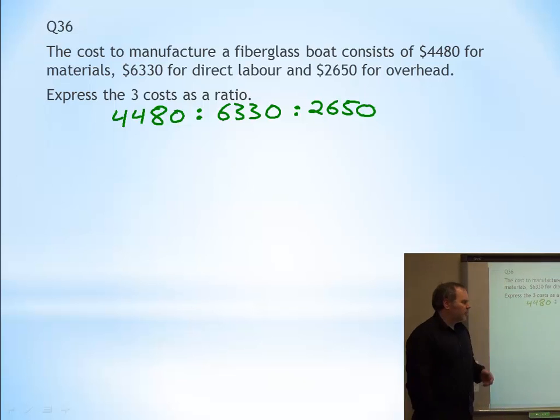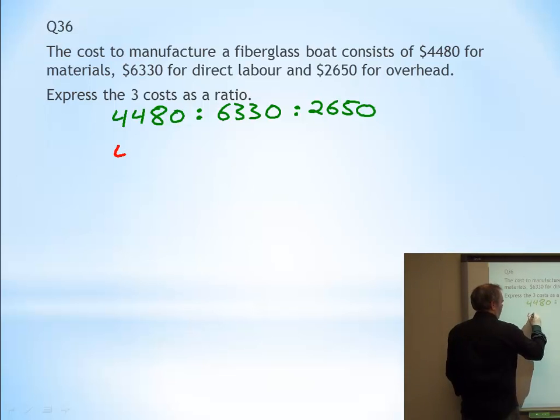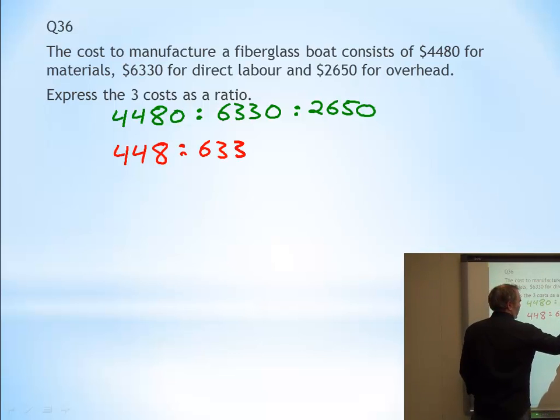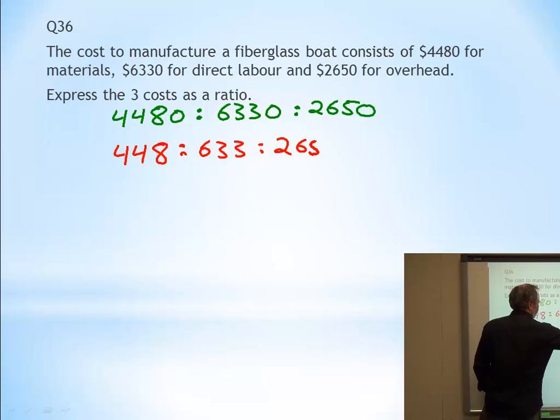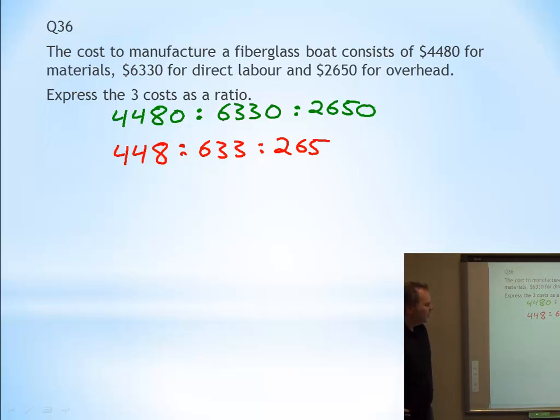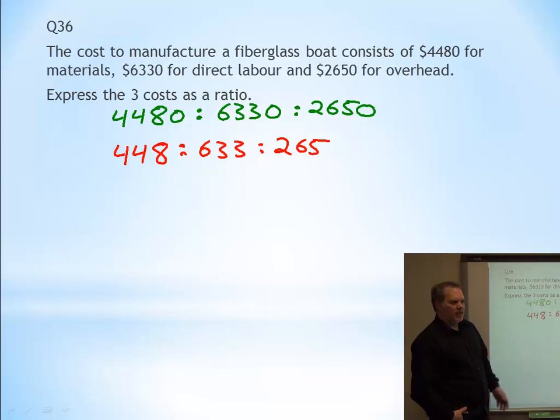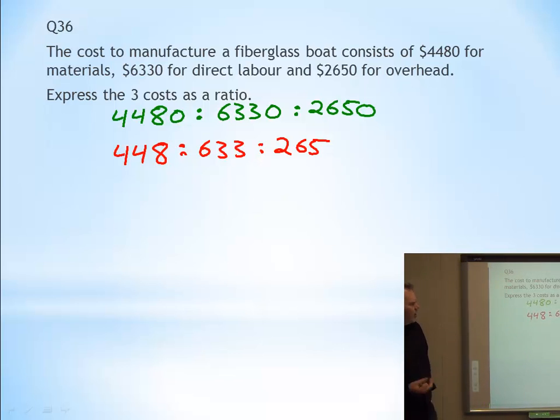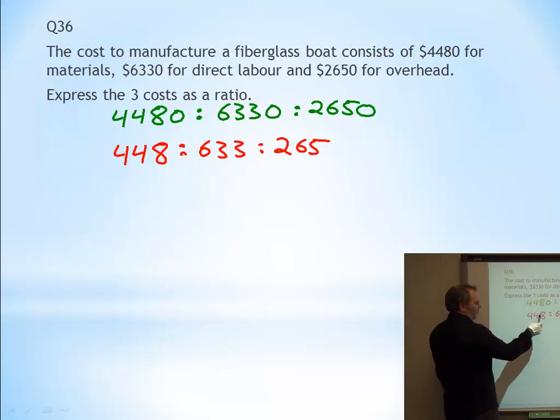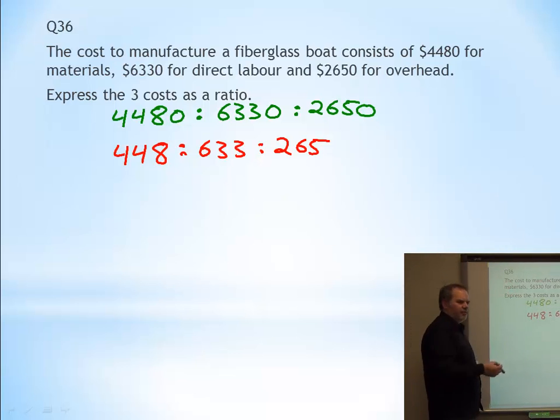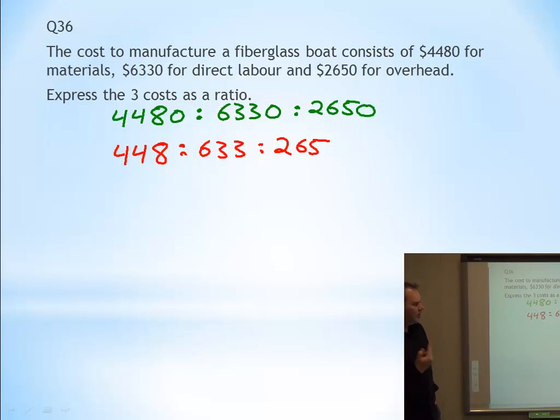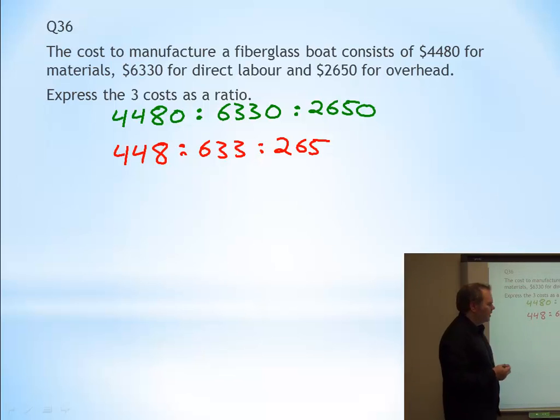Well, we're going to try to do it in lowest terms first. So first of all, what can we get rid of? Well, we can get rid of the zeros. So we can say 448, 633, 265. This works okay. Again, it's a ratio. We can't divide anything more. This isn't divisible by five. This is by three, but that's not by three. We can take a look at all the values. You can try every value from one to fifteen. You're not going to find it. So this is actually lowest terms.